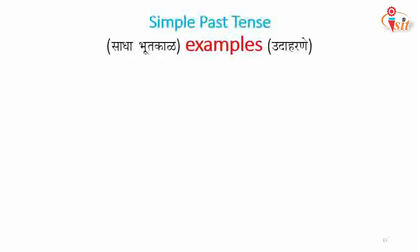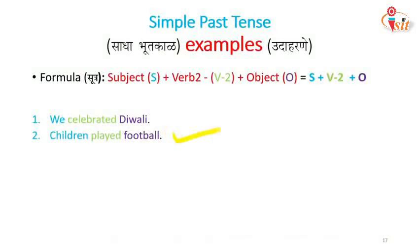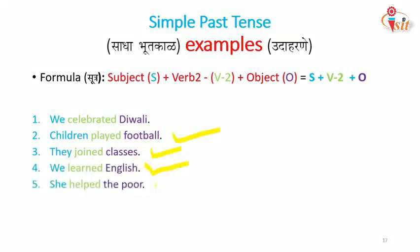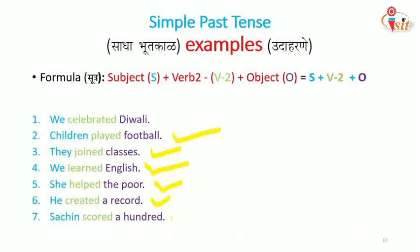Some more examples of simple past using the formula S + V2 + O: We celebrated Diwali. Children played football. They joined classes. We learned English. She helped the poor. He created a record. Sachin scored a hundred.